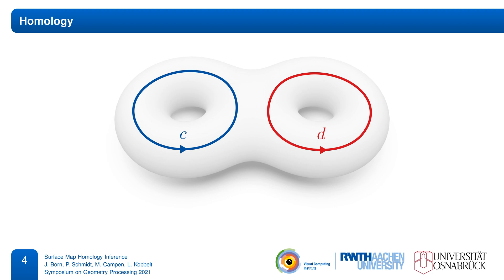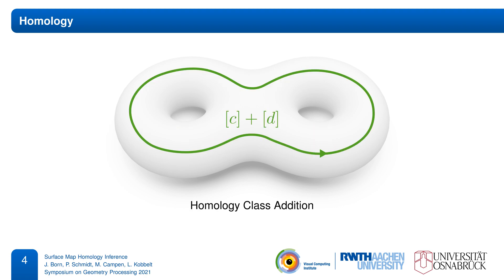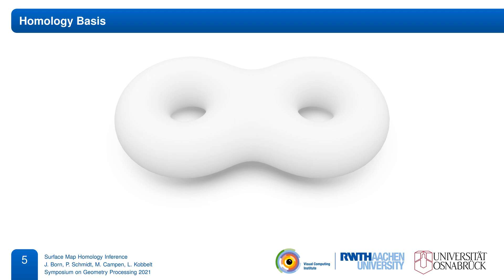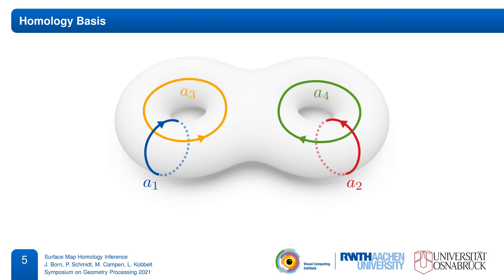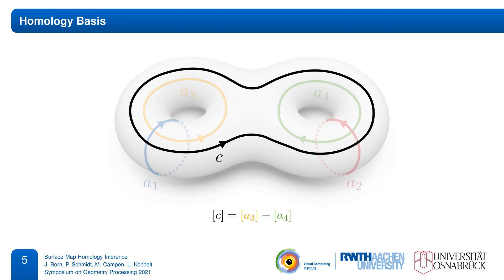When we add two cycles, the homology class of the result only depends on the homology classes of the summands, not their particular shapes, so we can consider cycle addition directly as an operation on homology classes. In fact, the set of all homology classes of a surface has a very convenient linear representation. For a surface of genus G, you can find some set of 2G cycles that act as a homology basis. Then any homology class is represented by an integer linear combination of these basis cycles, so you can encode any homology class just as an integer vector within this basis.